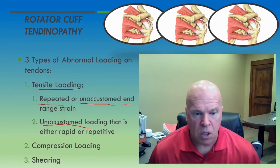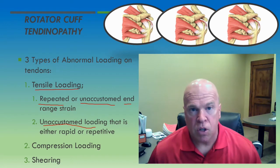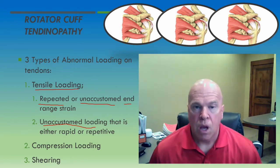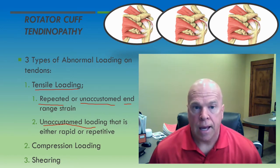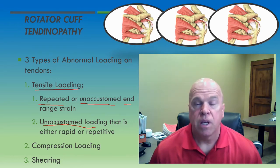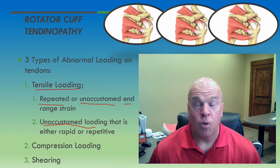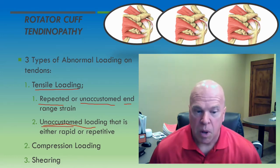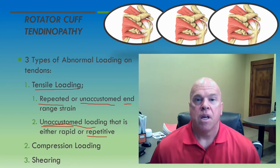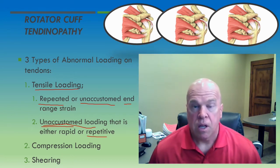Another example of abnormal tensile loading involves unaccustomed loading that is either rapid or repetitive within the mid range of motion of the joint. It doesn't have to involve end-range strain, but simply either rapid or repetitive loading that's unaccustomed. You'll hear this from your examinees — they'll tell you they were changed from their routine position at their job, placed into a new position, required to do a high volume of work because a co-worker was absent or there was some consolidation of duties. This type of unaccustomed, repetitive loading causes disruption within the internal environment of the tendon, causing it to become painful and ultimately degenerative.